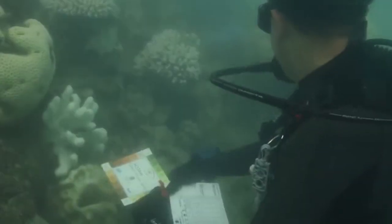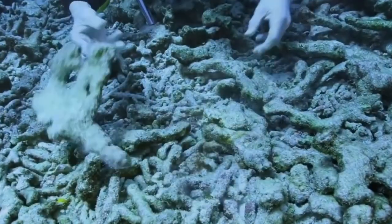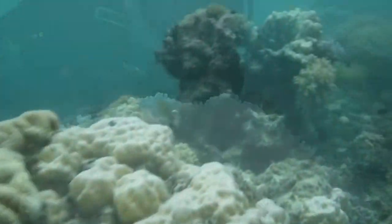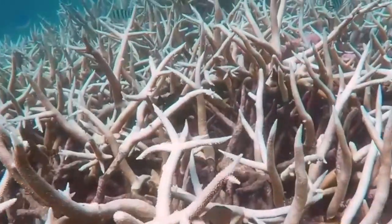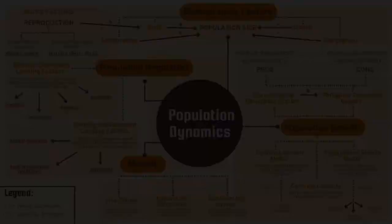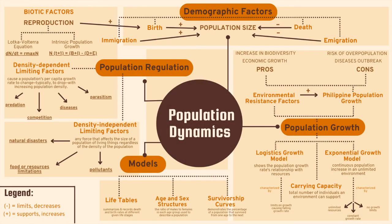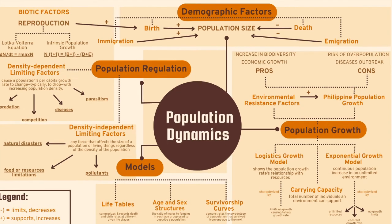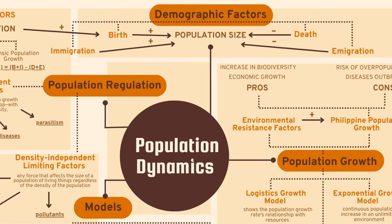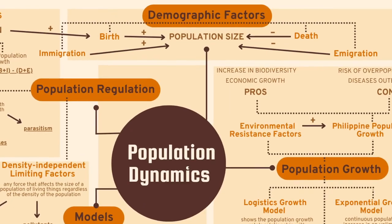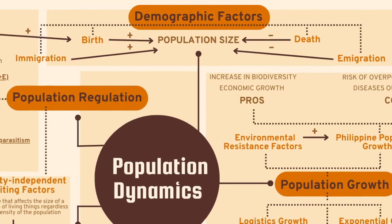Coral reef bleaching decreases marine biodiversity, which has a significant impact on the ecological stability and productivity of marine ecosystems. Meanwhile, density-dependent factors affect a population by increasing or decreasing birth and death rates in a way that is directly related to the density of the population.